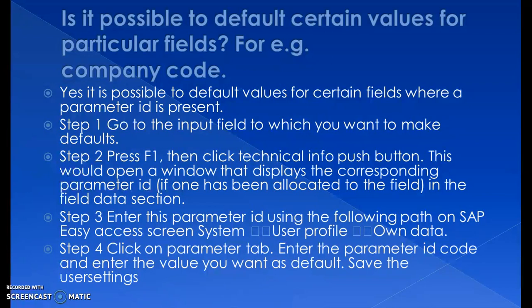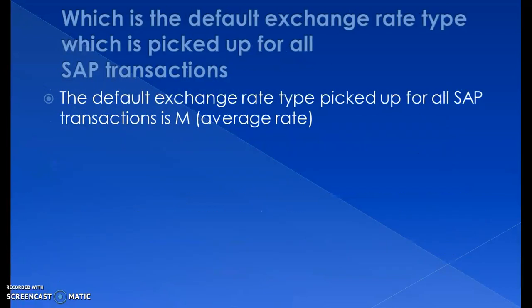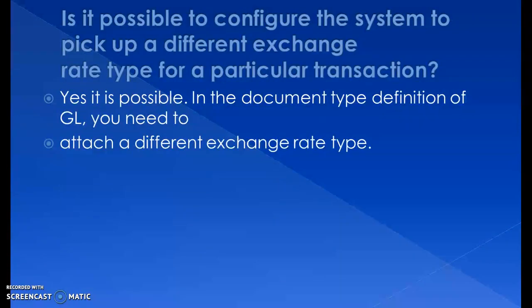Which is the default exchange rate type picked up for all SAP transactions? The default exchange rate type for all SAP transactions is M — that's called the average rate. Is it possible to configure the system to pick up a different exchange rate type for a particular transaction? Yes, it is possible. In the document type definition of the GL, you need to attach a different exchange rate type, and then you can maintain a different exchange rate for that particular transaction.